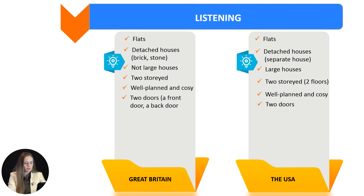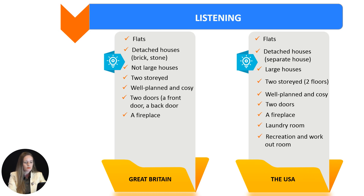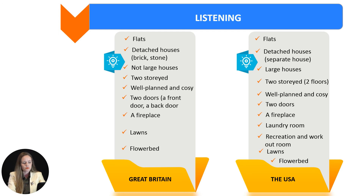As a rule, on the ground floor there is a sitting room, a dining room, a kitchen and a hall. The bedrooms and the bathroom are upstairs. English houses often have two doors — a front door for guests and a back door. Traditionally the British have a fireplace, a symbol of warmth, where they like to sit by the fire on winter evenings. In American houses there is a laundry room next to the kitchen. They usually also have a recreation and workout room in the basement. One cannot imagine a house in Britain or America without lawns and a flower bed in the front.